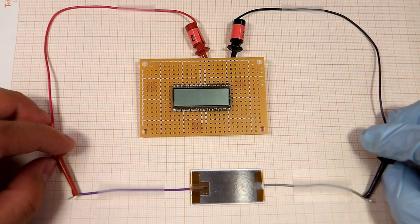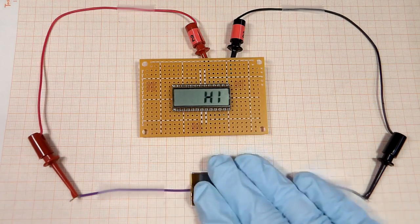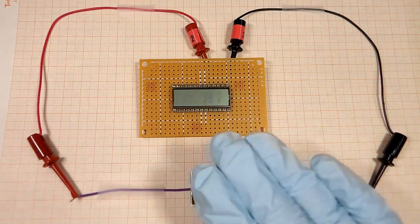In this video, we will show you how to make a paper power source that can generate enough electrical current to power a tiny LCD screen.